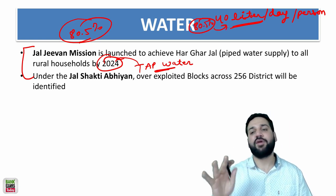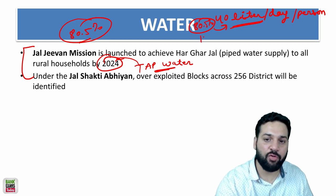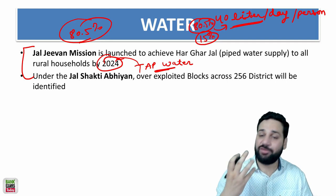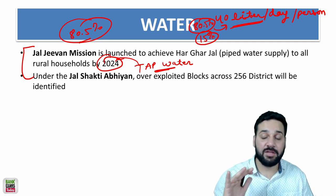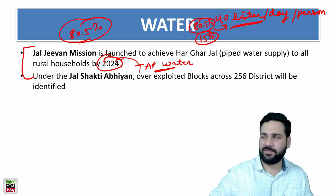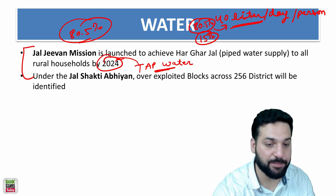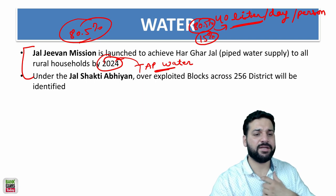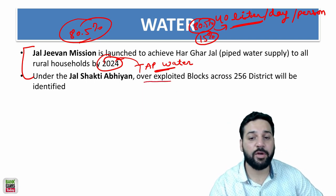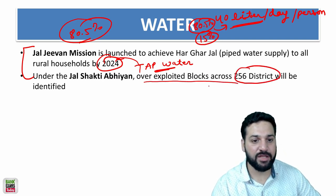Around 80.5 percent of people in India are getting more than 40 liters of water per day per person. Around 15 percent are getting water but the quality is not good. The remaining roughly 4.4 percent are not getting even 40 liters per day. Under Jal Shakti Abhiyan, over-exploited blocks across 250 districts have been identified and the government of India is going to work on them.